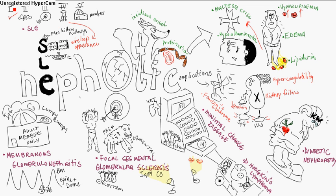Types one and two have no treatment, but types three, four, and five require aggressive immunosuppression — corticosteroids, cyclophosphamide, azathioprine, and chlorambucil. Really, the renal lesion severity often depends on the overall prognosis for SLE patients.